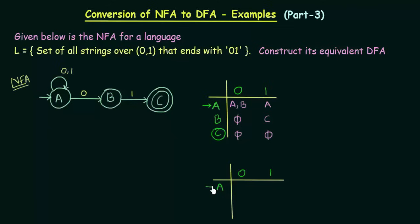I will give an arrow to indicate it is a starting state. A on getting input 0, where does it go? It goes to states A and B. But in a DFA we cannot send it to two states, so we will convert this A, B to a single state which I will call AB. And A on getting input 1 goes to A itself, so that is okay.